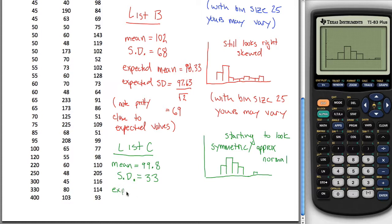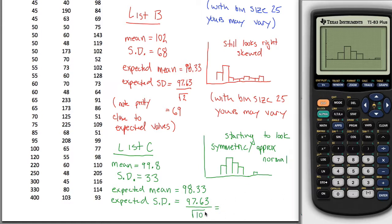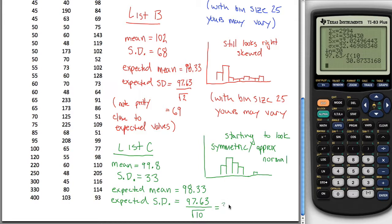Then we're almost done. We just got to figure out our expected mean. Then to figure out our expected mean, it's just the exact same as List A, 98.33. We never expect the mean to change. We change a tiny bit, 99.8 to 98.33, pretty close. And our expected standard deviation, that's our original standard deviation from List A of 97.63 divided by the square root 10. So we can figure out what 97.63 divided by root 10 is using a calculator. 97.63 divided by square root 10 and we get 30.9 and again, close to what we expected.